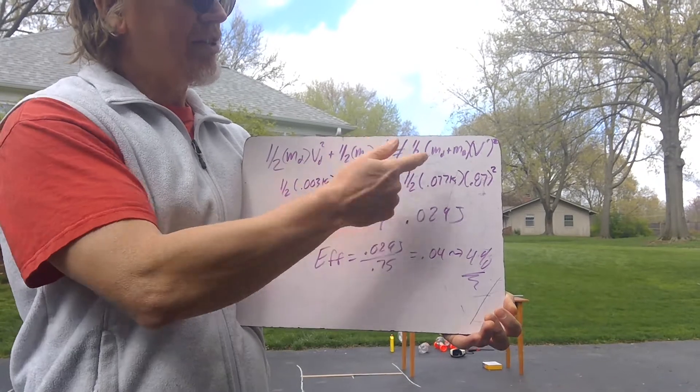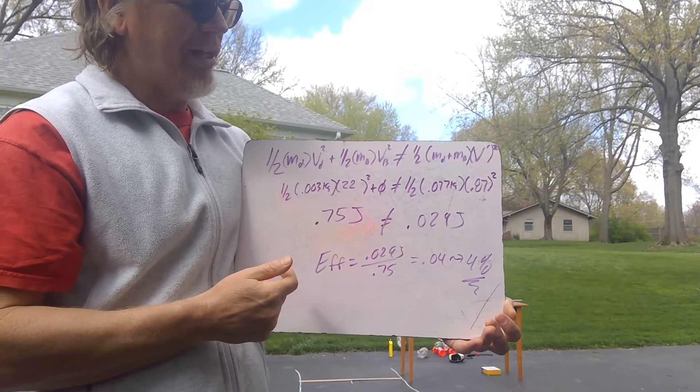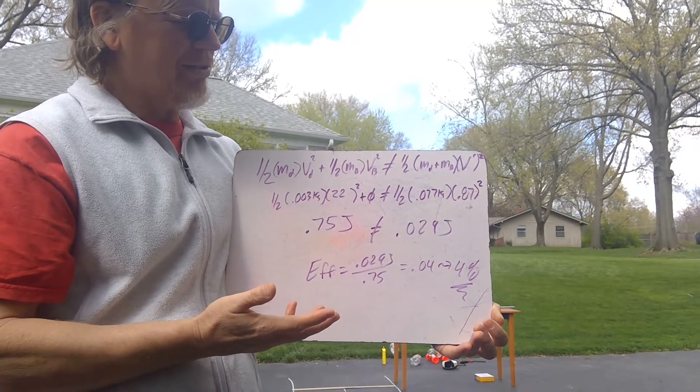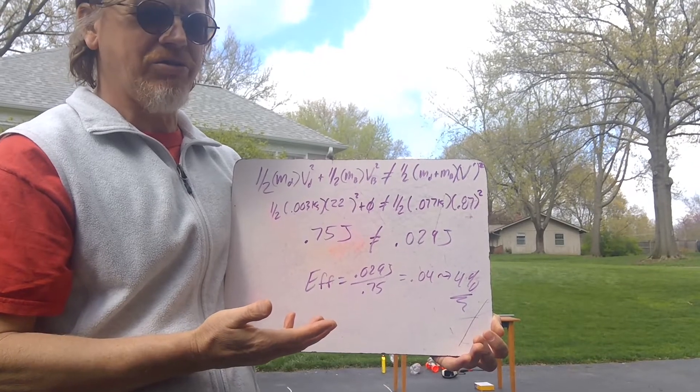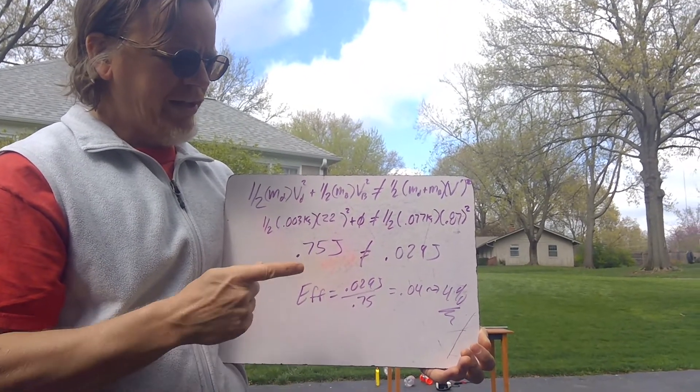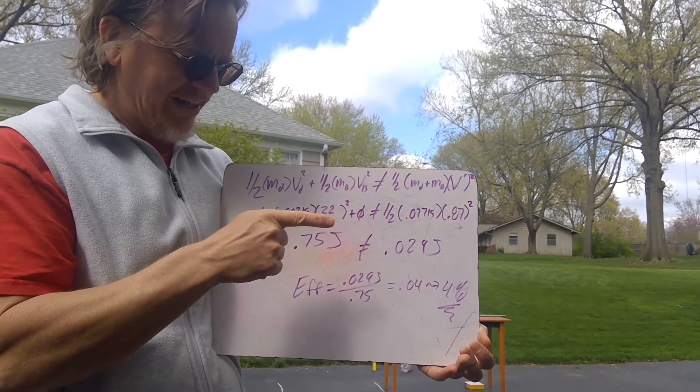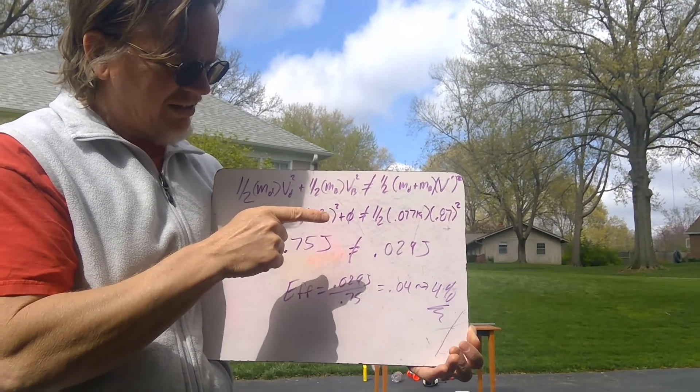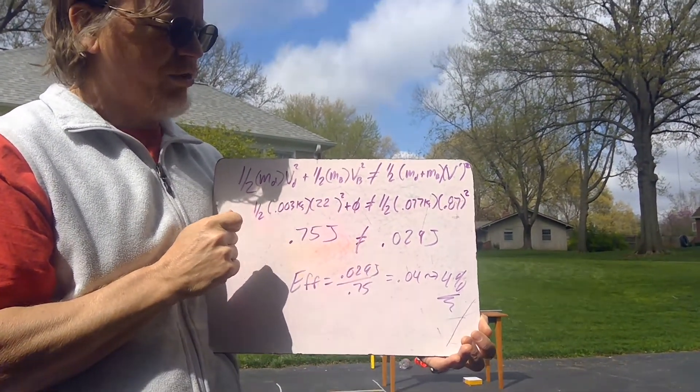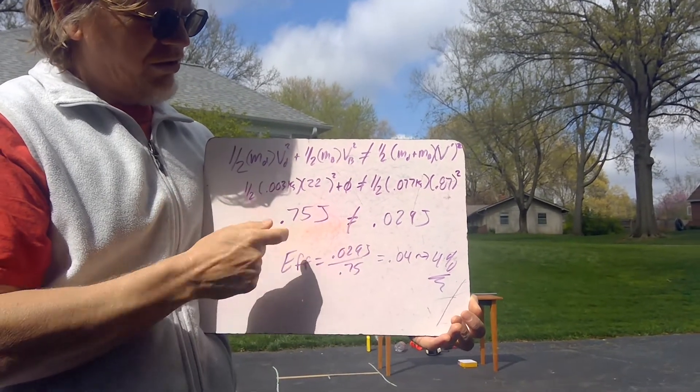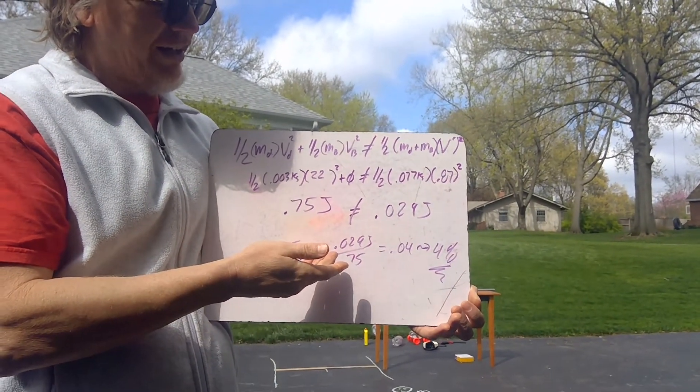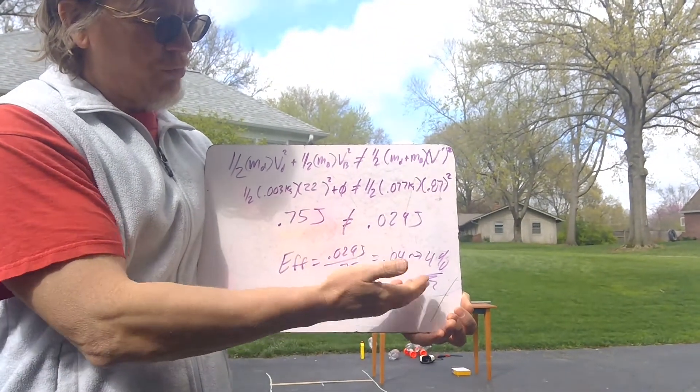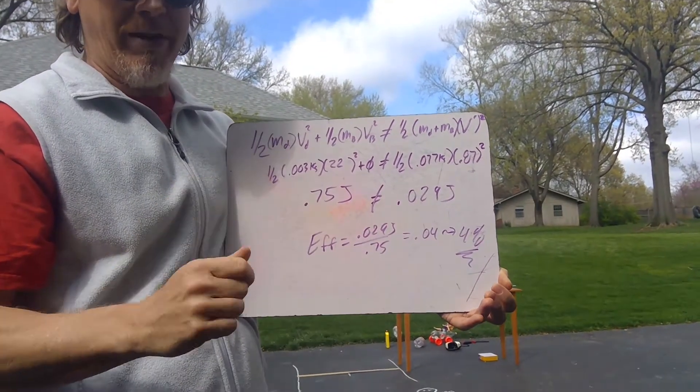So where is that 96% of the missing energy? Well, when that dart goes squeezing into the block, that inelastic collision, there's a lot of friction. And that does a lot of negative work to slow down that nail or the dart squeezing into the block and creates a lot of heat energy. So 96% of the energy that the dart had has gone into thermal energy warming up both the dart and the block. So we only kept 4% of the energy, but we had 100% of the momentum afterwards.